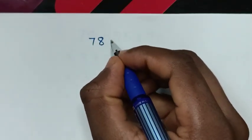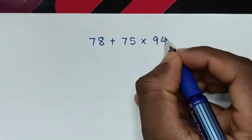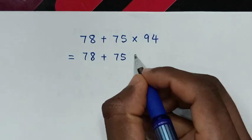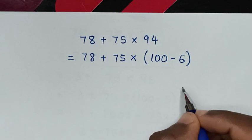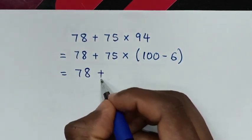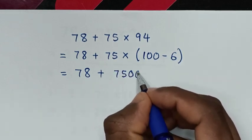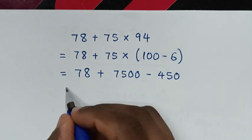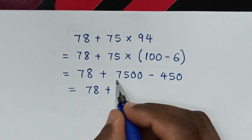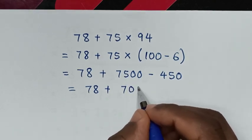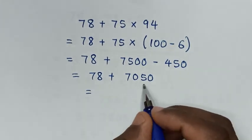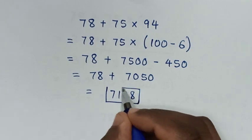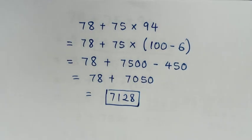Solving by another method: from 78 plus 75 times 94. It will be equal to 78, then plus 75, times 94, which is the same as 100 minus 6, in brackets. Then it will be equal to 78, then plus 75 times 100, which is 7,500, then minus 75 times 6, which is 450. Then it will be equal to 78 plus 7,050, which equals 7,128. So this is our final answer.